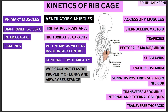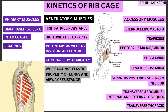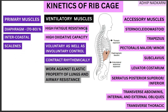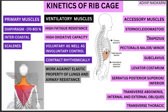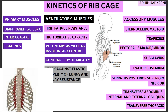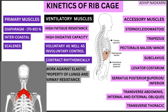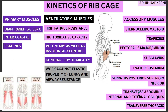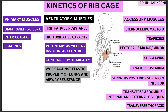Before we go to the muscle names, we must distinguish between primary muscles and accessory muscles. Primary muscles carry out quiet breathing — that includes the diaphragm, intercostal muscles, and scalene muscles. When ventilatory effort increases during running, the accessory muscles play an important role: sternocleidomastoid, trapezius, pectoralis major and minor, subclavius, levator costarum, serratus posterior superior and inferior, transverse abdominis, internal and external obliques, and transverse thoracis.